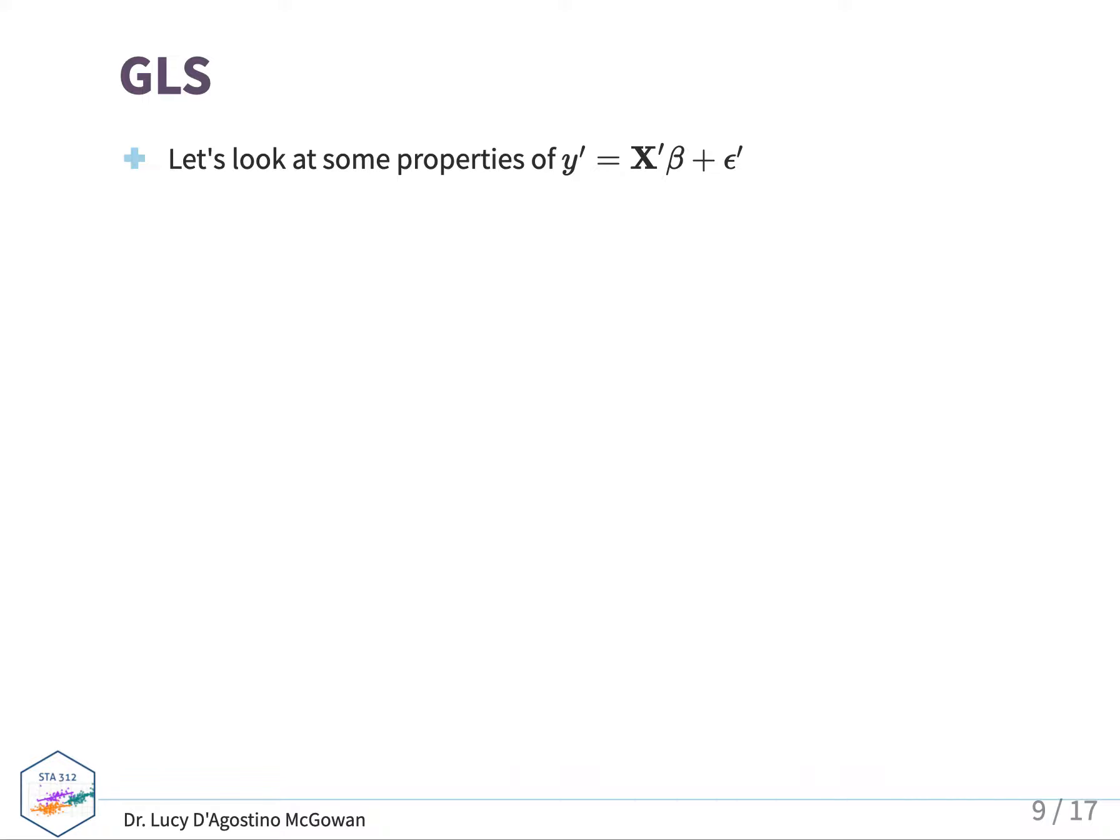Some more properties. We've just shown the variance of epsilon prime. Now let's talk about the sum of squares. So the sum of squares for this, the residual sum of squares,